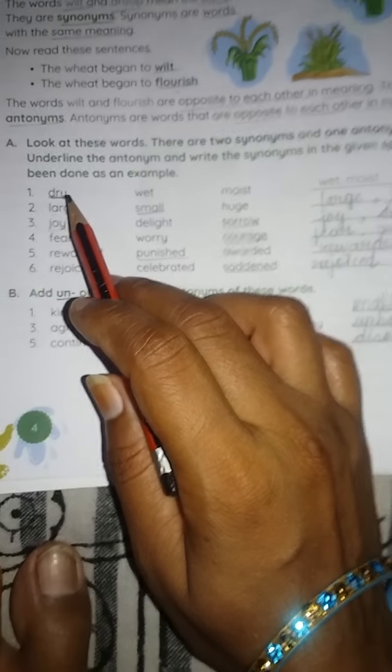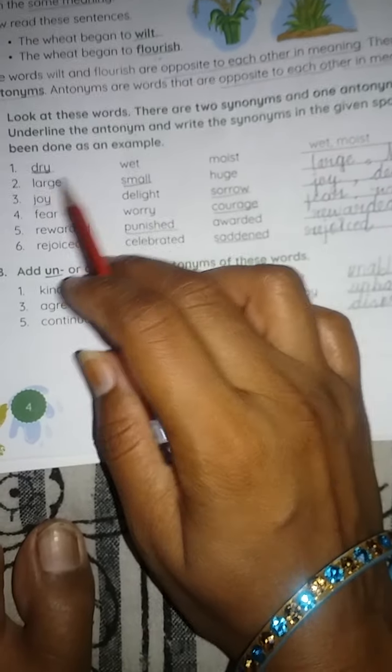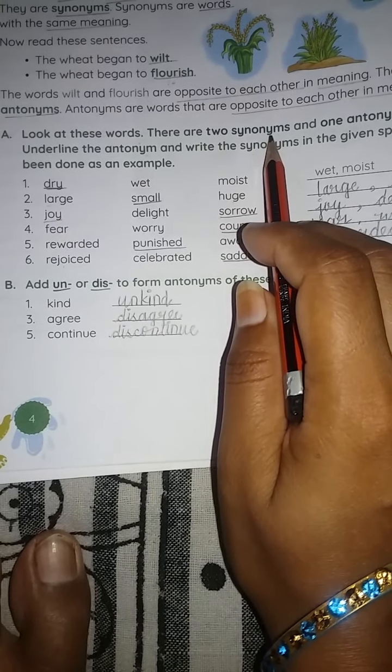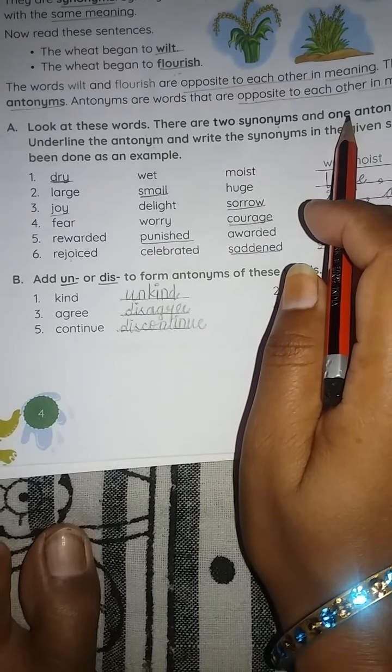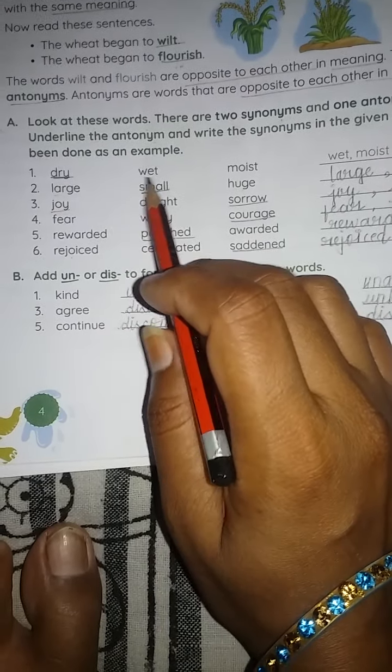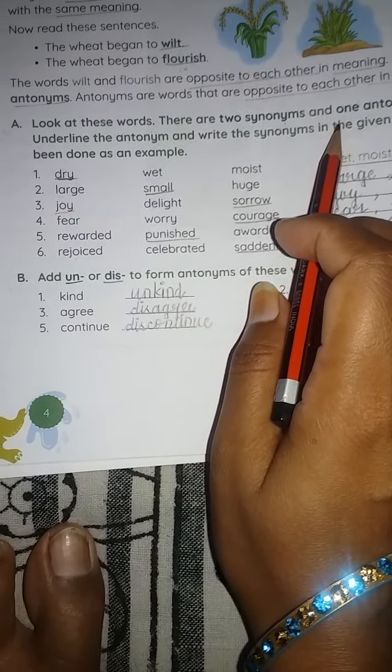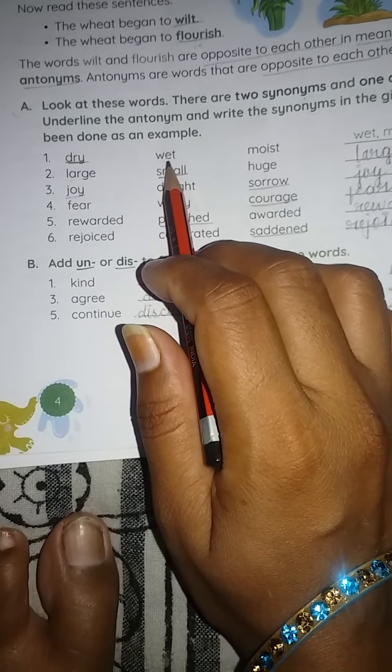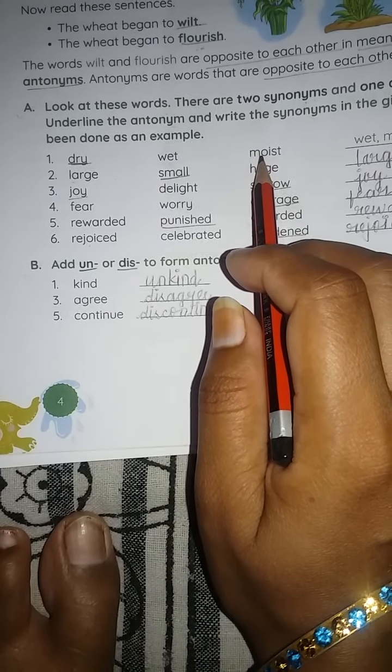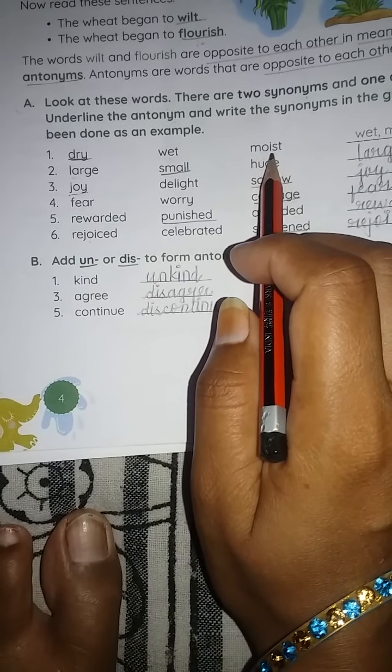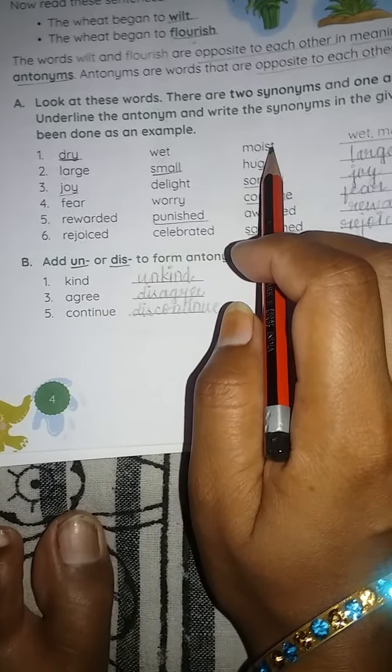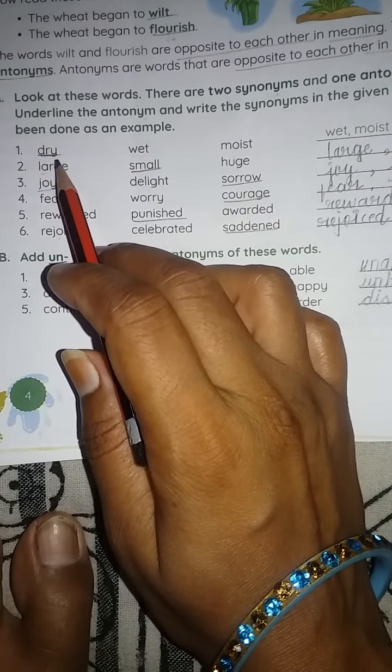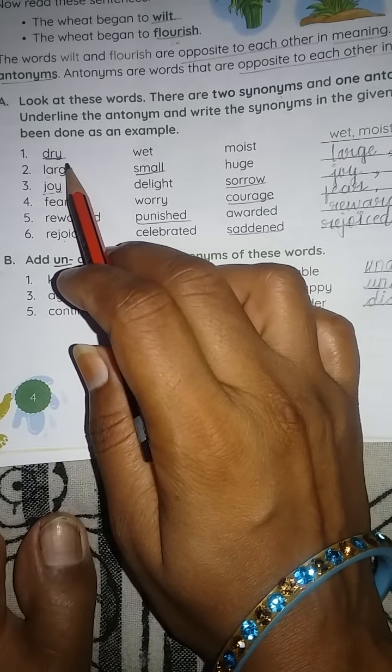See in the first row three words are given here: dry, wet, moist. Now what do you have to do in these three words? Two are synonyms and one antonym. Now let's identify which two are synonyms and which one is their antonym. Dry means sukha, wet means gila, moist means gila hota hai. So wet and moist, both have the same meaning. So these two are synonyms. So we'll write them here: wet, moist. And dry, sukha hota hai, so it's the opposite. So we underline the antonym.